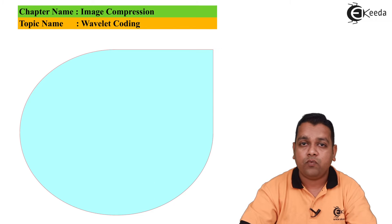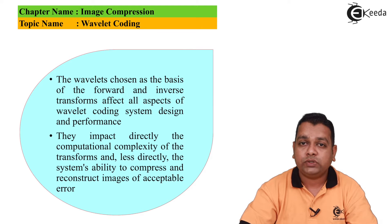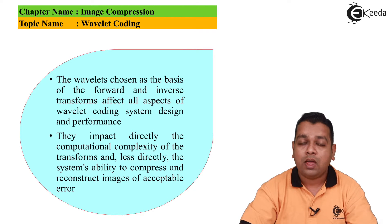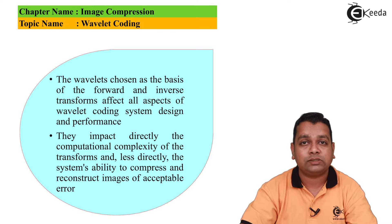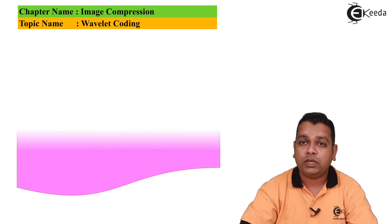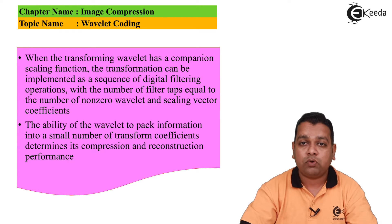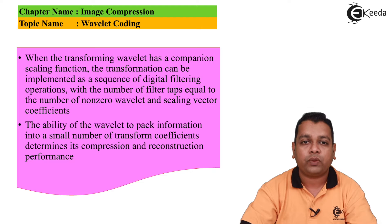The first factor is Wavelet selection. The Wavelets chosen as the basis of the forward and inverse transforms affect all aspects of the Wavelet coding system design and performance. They directly impact the computational complexity of the transforms and less directly the system's ability to compress and reconstruct images with acceptable error. When the transforming Wavelet has a companion scaling function, the transformation can be implemented as a sequence of digital filtering operations, with the number of filter taps equal to the number of non-zero Wavelet and scaling vector coefficients. The ability of the Wavelet to pack information into a small number of transform coefficients determines its compression and reconstruction performance.